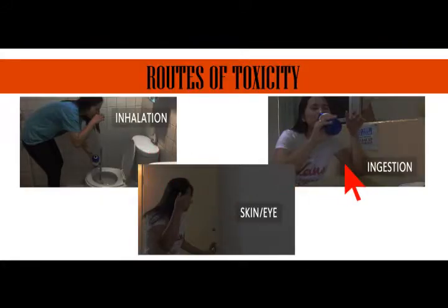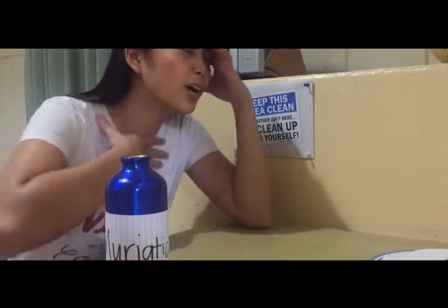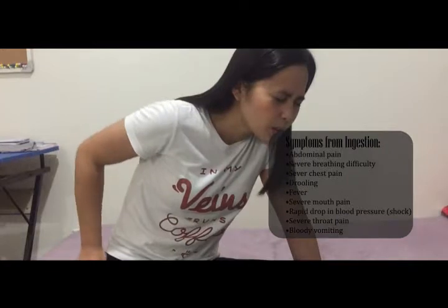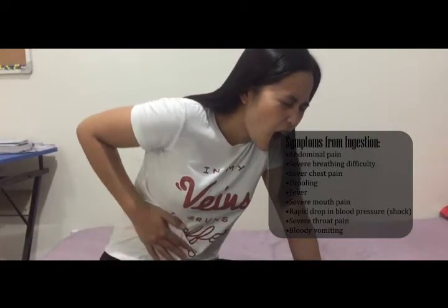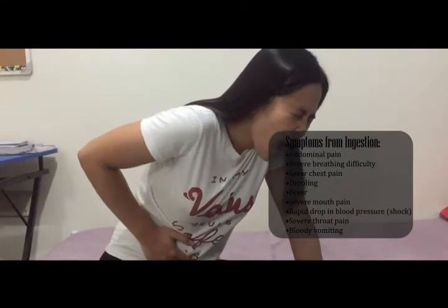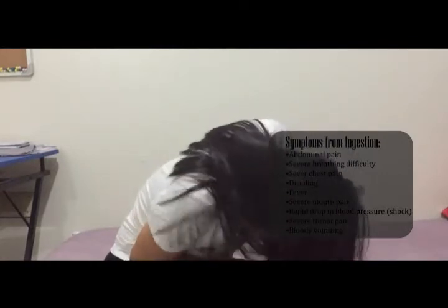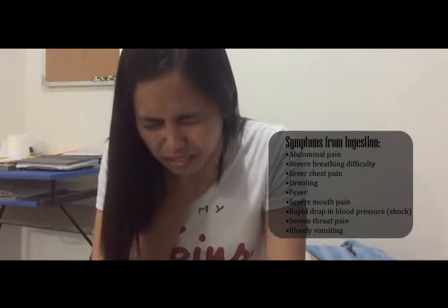Ingestion of concentrated muriatic acid can cause severe corrosive injury to the lips, mouth, throat, esophagus, and stomach. This includes severe abdominal pain, difficulty breathing due to swelling of the throat, severe chest pain, drooling, fever, and severe mouth pain.